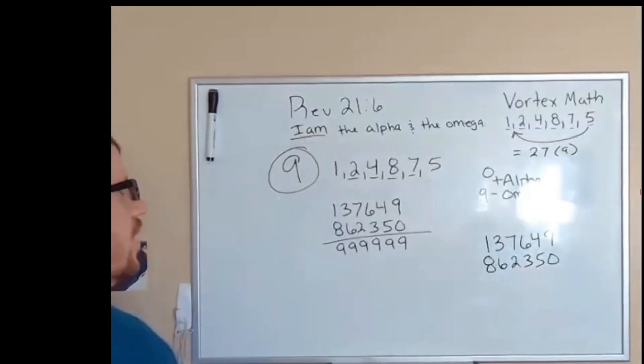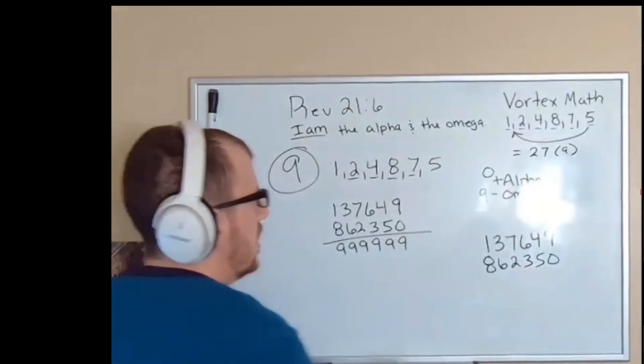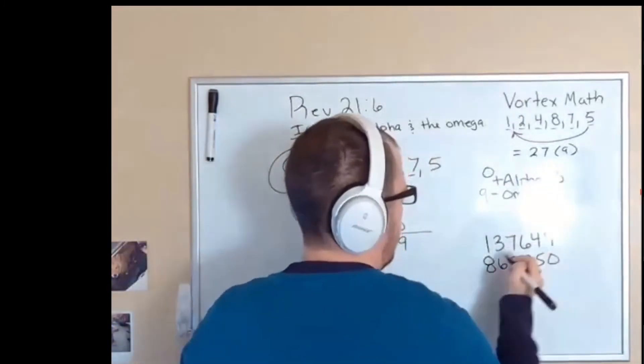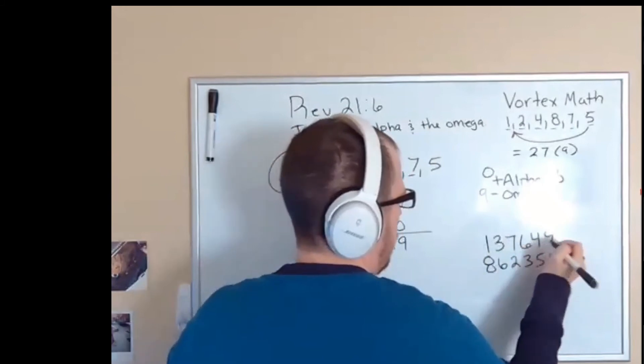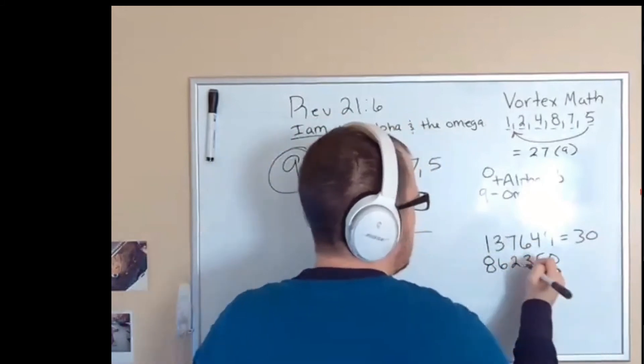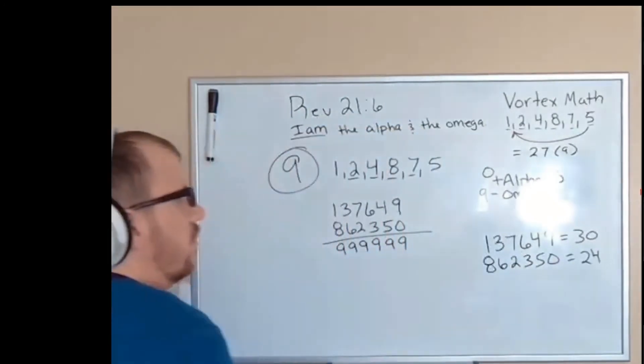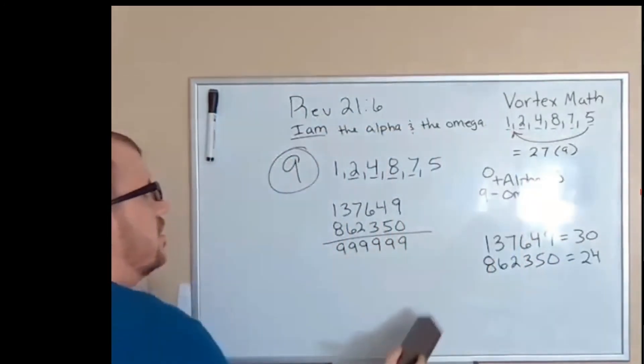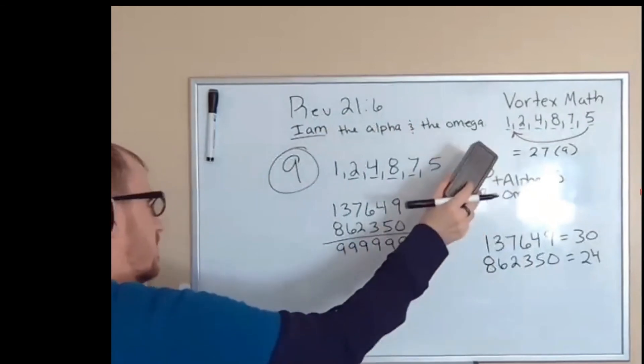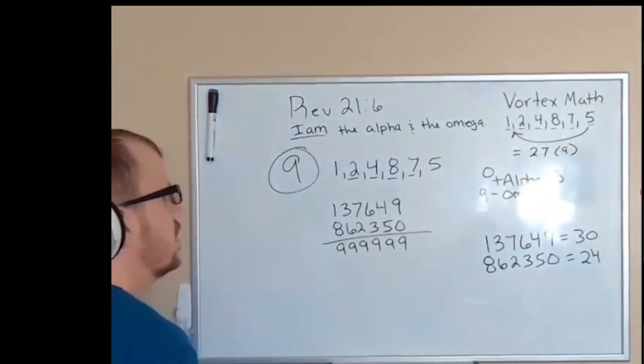It is showing you that with the alpha, which is a three when you add it up, because one, three, seven, six, four, nine is 30, and eight, six, two, three, five, zero is 24. I am the alpha and the omega, the beginning and the end. Nine is everything in the alpha, everything in the omega together, and it is the beginning of the end of all creation.